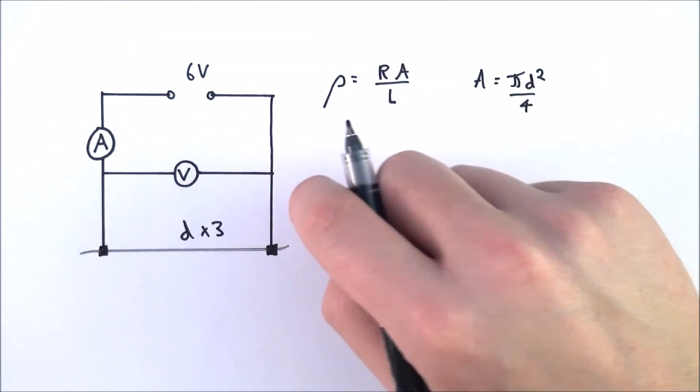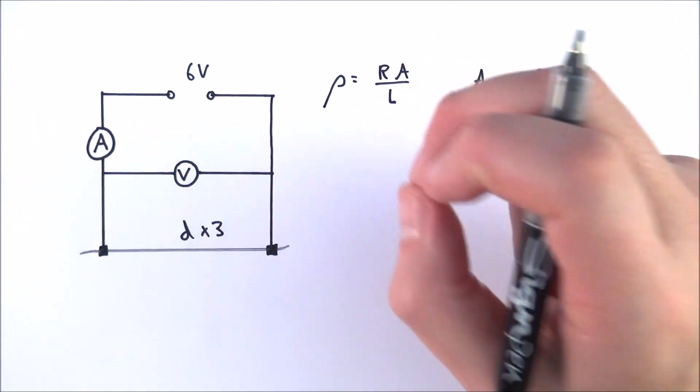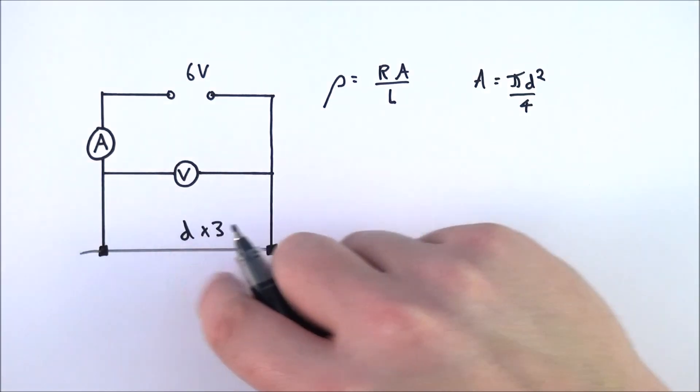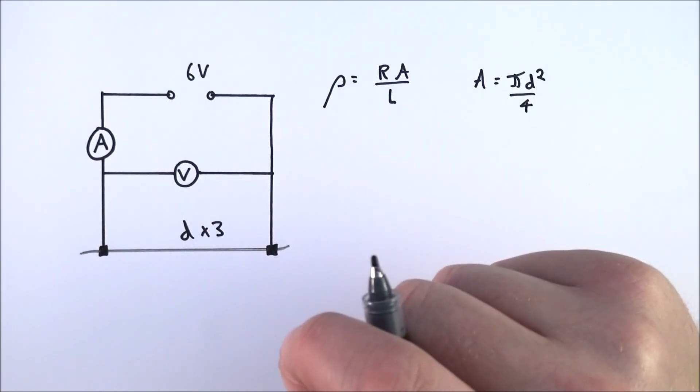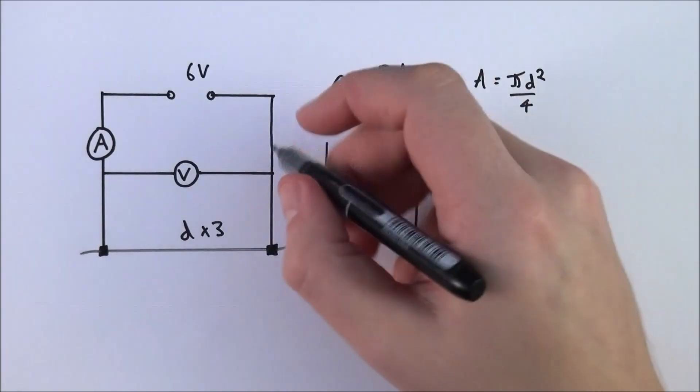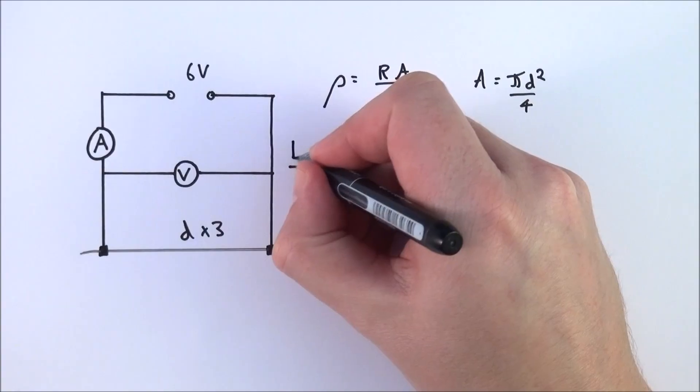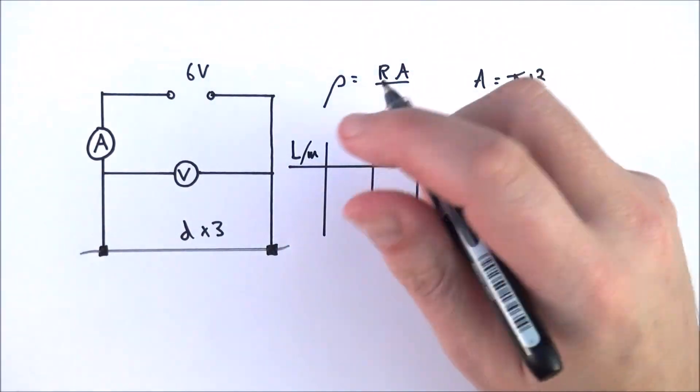When it comes to doing the experiment, what you need to do is vary the length of wire. You can go from about 10 centimeters all the way up to about a meter. You're going to vary the value of L that you measure in meters.